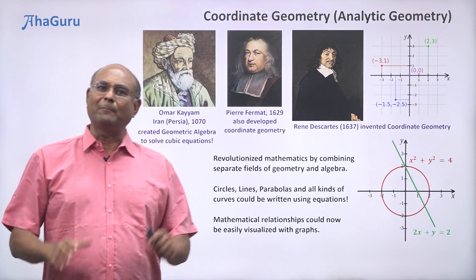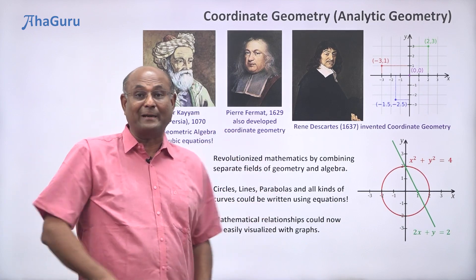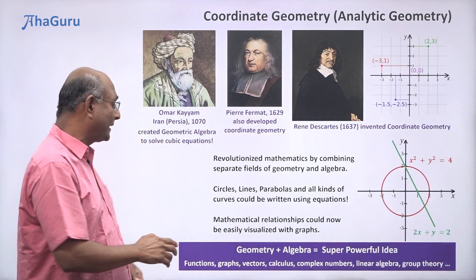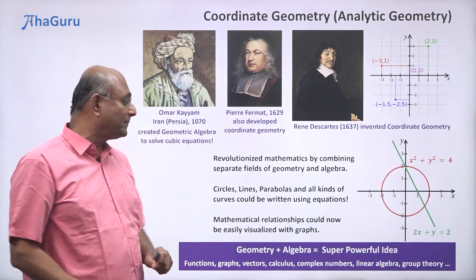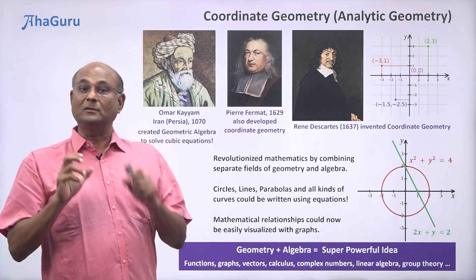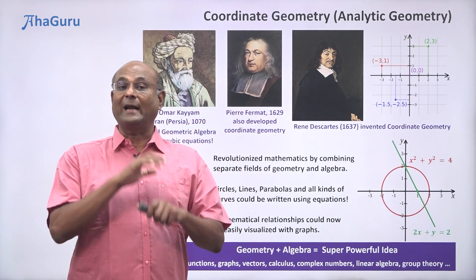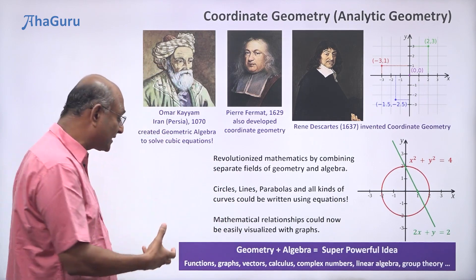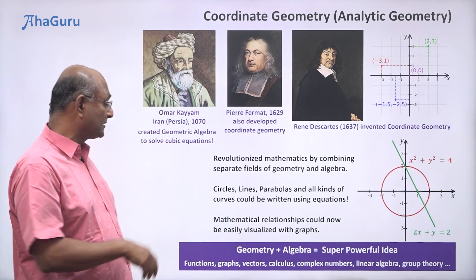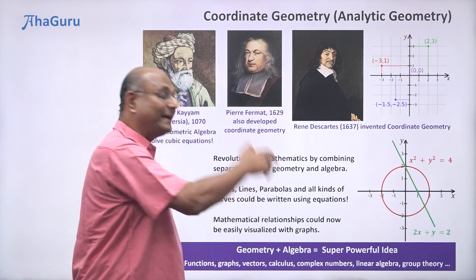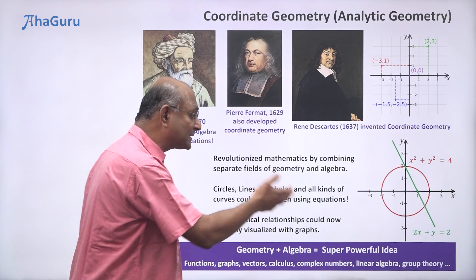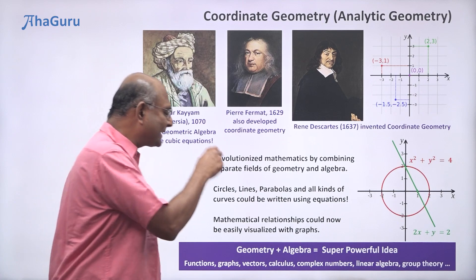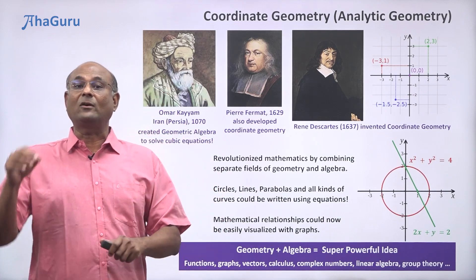Anyway, let us leave aside the politics and history of mathematics and get down to the mathematics itself. Whoever invented coordinate geometry, the idea of combining geometry and algebra turns out to be a super powerful idea. We should understand how to use it because it led to the idea of functions, graphs, vectors, and calculus — calculus depended on coordinate geometry heavily — as well as complex numbers, linear algebra, and group theory. A huge amount of mathematics developed because of this idea.